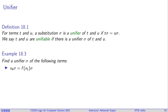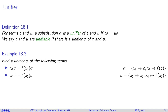Here's an example. Consider the terms f(x1) and x4. We can map x1 to something and x4 to something such that both terms become equal. One solution is x1 mapped to c and x4 mapped to f(c), so both terms become f(c) and are therefore equal. We can also use a variable x2 instead of the constant c — it's a matter of choice how you unify, as long as both sides become equal.